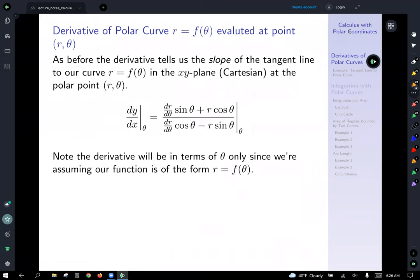So what does this actually tell us? Well, as always, note here that the derivative tells us the slope of the tangent line to our curve r equals f of theta. Even though it's defined in polar coordinates, the derivative as we've calculated is going to give us the derivative in the xy plane. Why the xy plane? Well, because we're calculating the derivative of y with respect to x, not the derivative of r with respect to theta. And what does the derivative tell us? It tells us the slope of the tangent line. We don't want to do lines in polar coordinates. We want to do lines in rectangular coordinates, Cartesian coordinates.